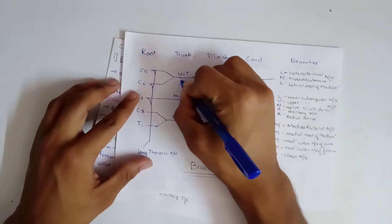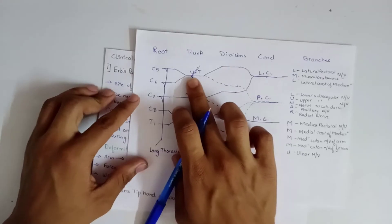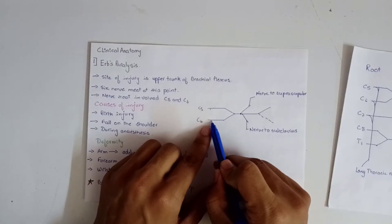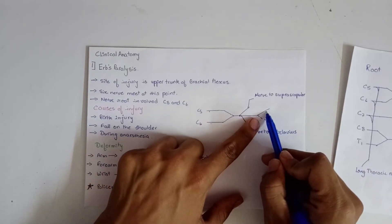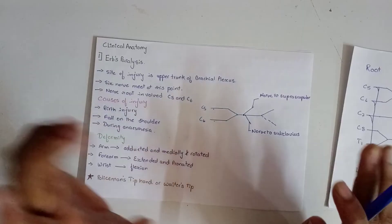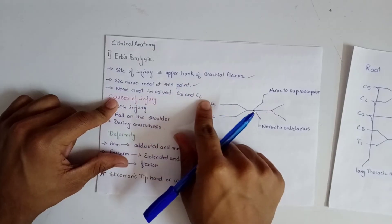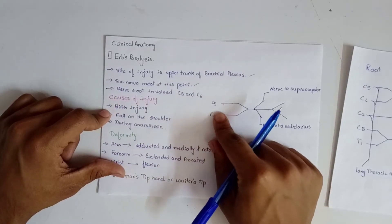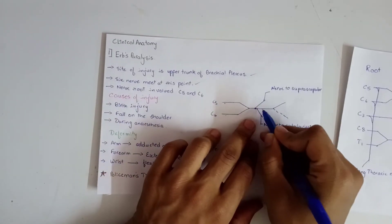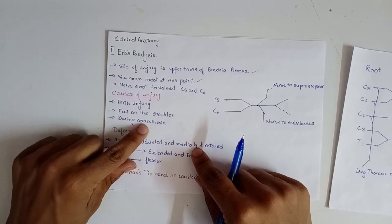Here is the upper trunk of the brachial plexus with the site of injury. C5 and C6 are the root values. The upper trunk gives rise to the ventral division, dorsal division, suprascapular nerve, and nerve to subclavius. The nerve roots involved are C5 and C6.